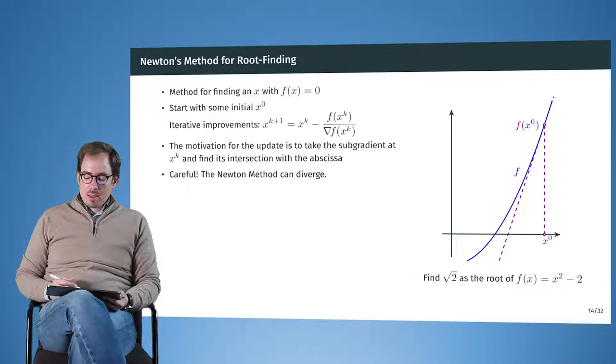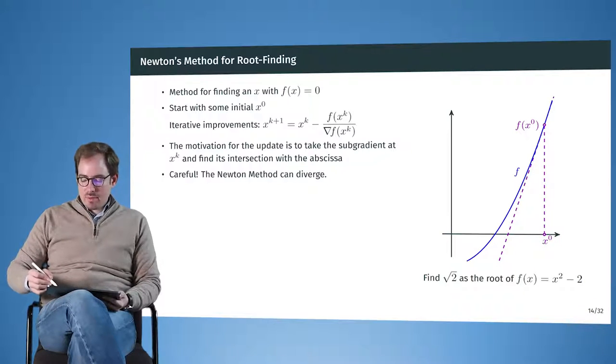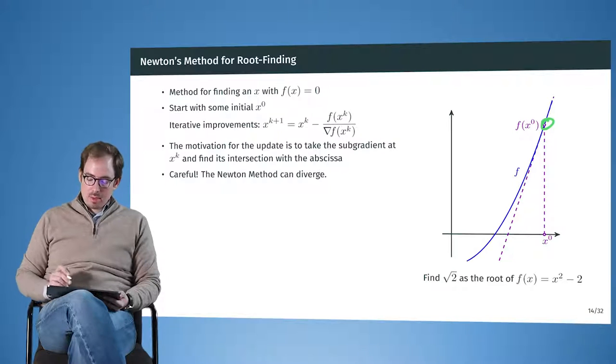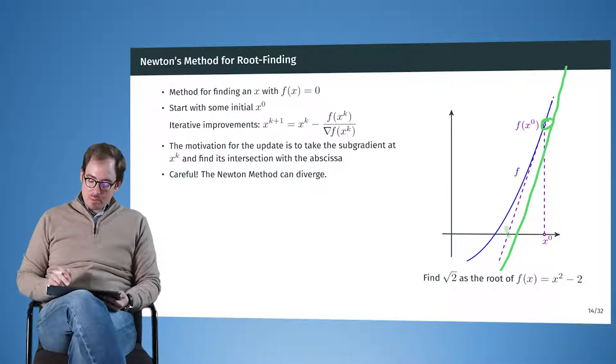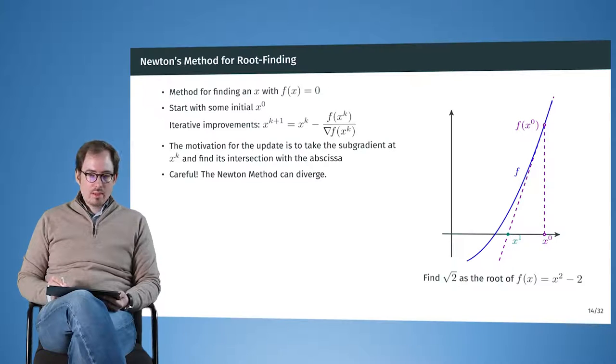And then we take, then we linearize the function around this point, and here we have the gradient going down. And now we take the intersection of the gradient, or of the sub-gradient at this point, the intersection of the sub-gradient with the abscissa, and select this as the location of the next point we will evaluate. And this is repeated and repeated until we get really close to the actual root.